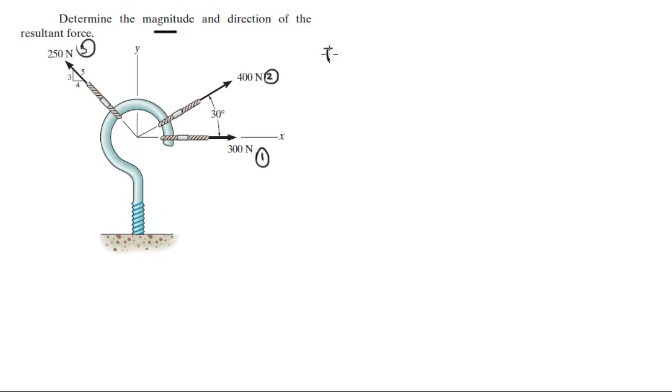So F1 is equal to 300 towards the positive x axis plus 0 in the y axis.